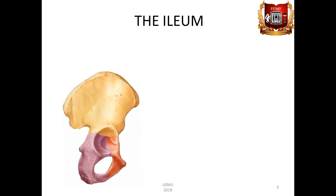The ilium, os ilium, consists of the body, corpus osis ilium, and the wing, ala osis ilii. The upper flattened part of the wing is called the crest, crista iliaca.